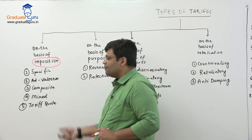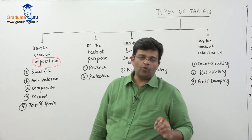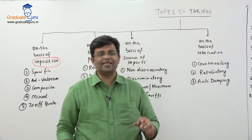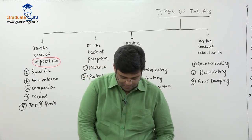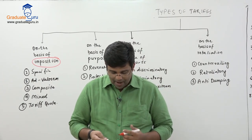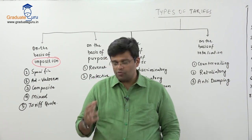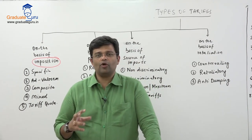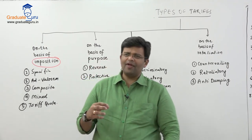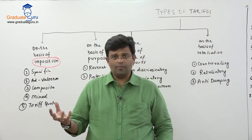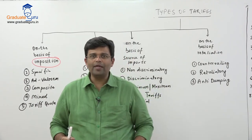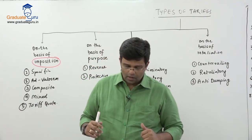A specific tariff is fixed — for example, 50 rupees per kg or 100 rupees per kg. It is imposed on agricultural products, chemicals, fertilizers, cement, and commodities. The problem is that it does not depend on the value of the commodity. It is applied where there is high volume and low value — quantity is more but value is less.